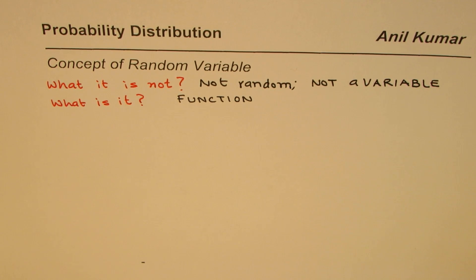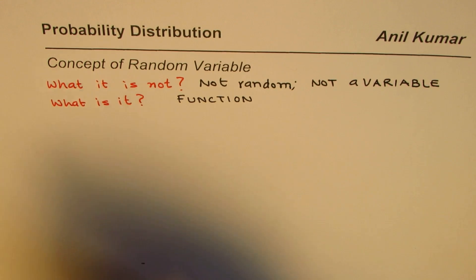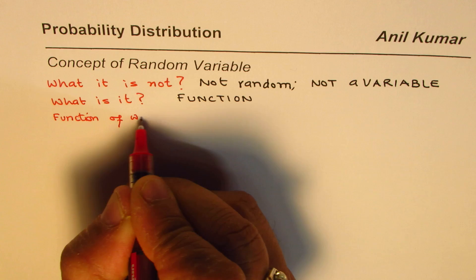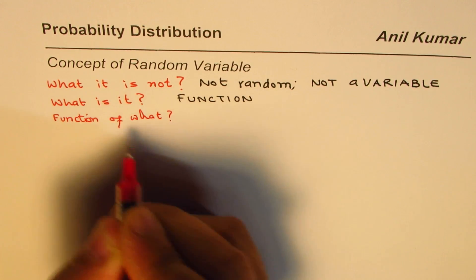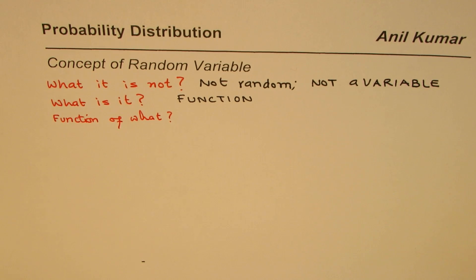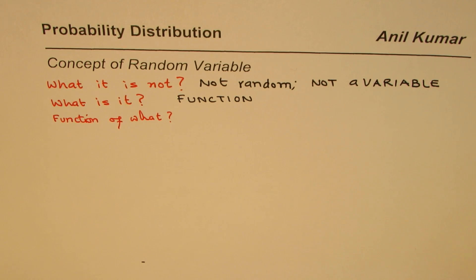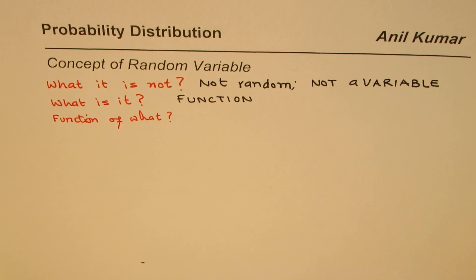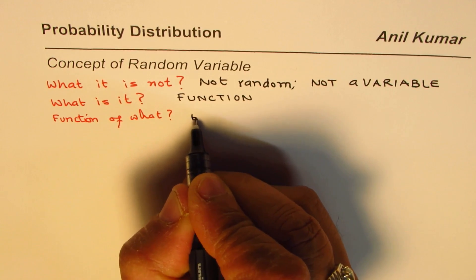The obvious next question is: function of what? They are functions of a sample space. Now we are talking about probability distribution, so in probability you have events, and every event will have outcomes.